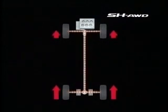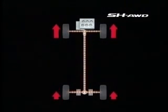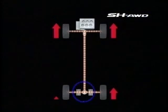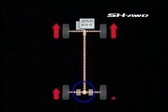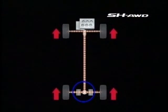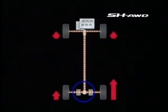In the new SHAWD, the twin clutches of the rear differential achieve simultaneous control over front-rear torque distribution and lateral torque distribution to the rear wheels — a world's first.